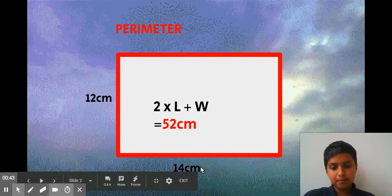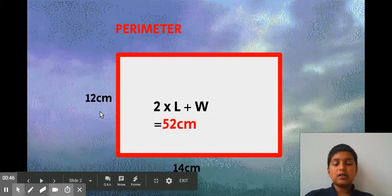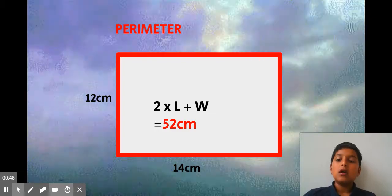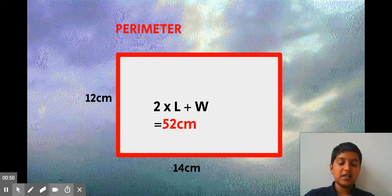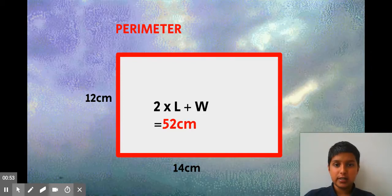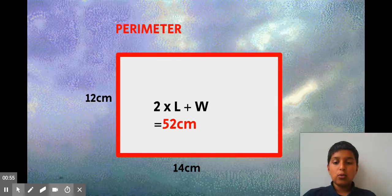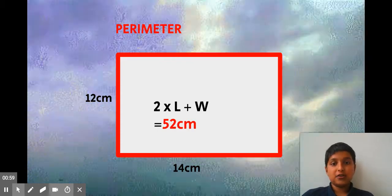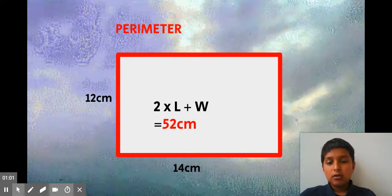And the width is 12 centimeters over there. These are called your dimensions. With these numbers, you will be able to find out the perimeter of the shape.